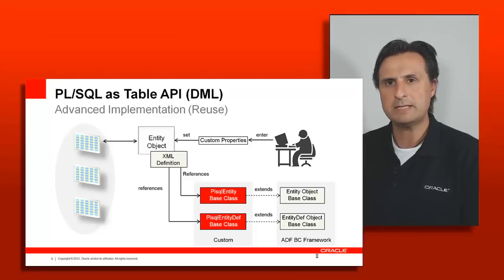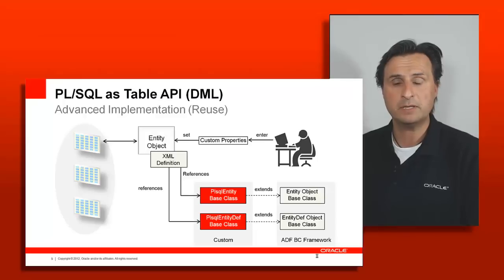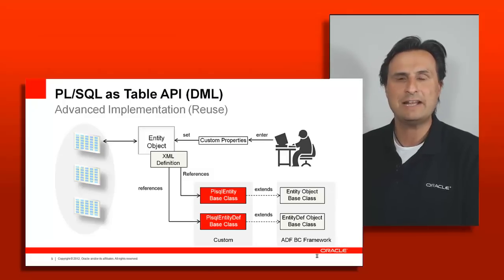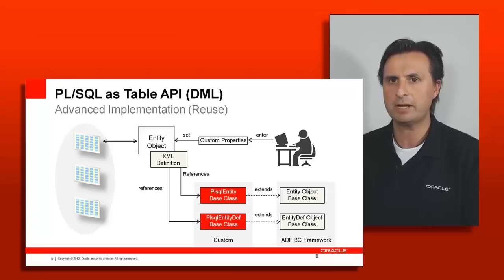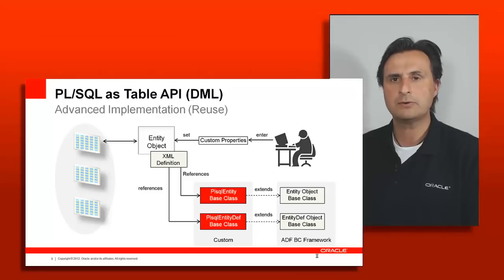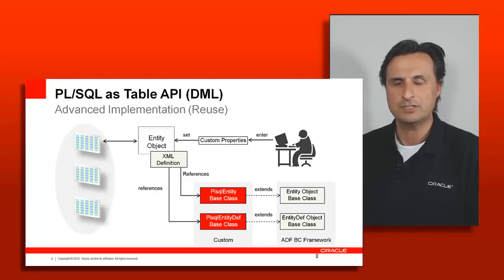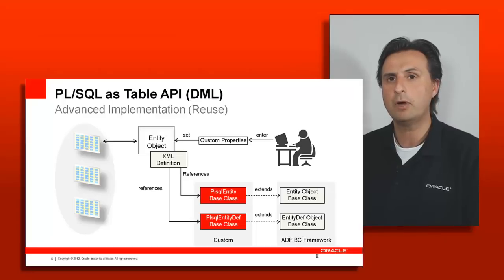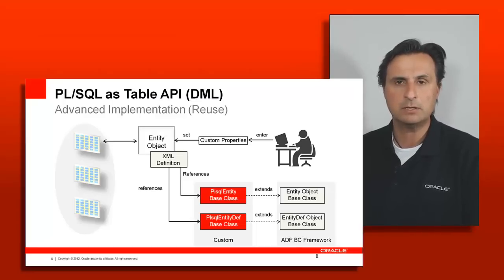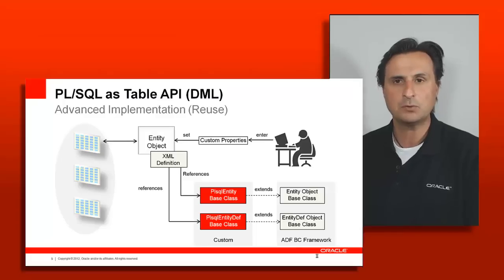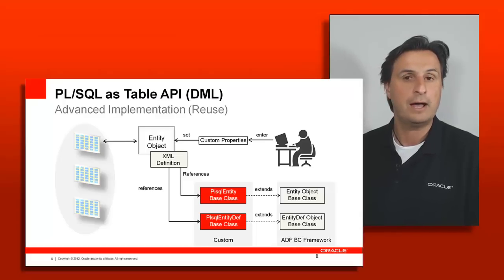On this picture there are two base classes that we recommend you build. One is for the entity implementation and the other is for a class we haven't talked about yet — the entity def impl class, which is the definition of the entity class. This class is needed for the generic approach to allow you to parameterize entity use. You have a base class that knows how to call stored procedures — it has the doDML operation overridden — and it needs to know which stored procedure to call and which attributes to inject as arguments. All of this needs to be parameterized.